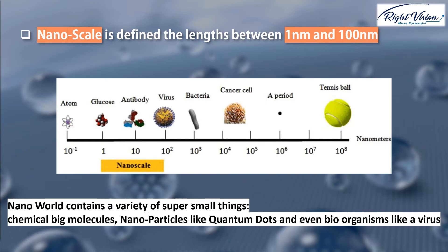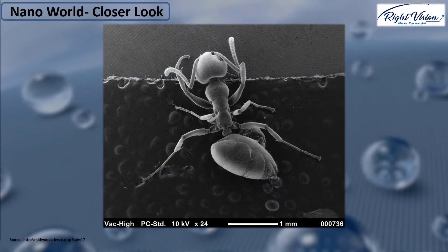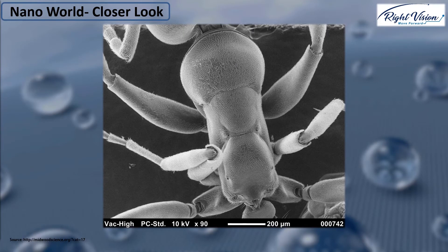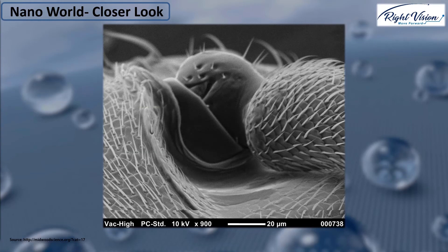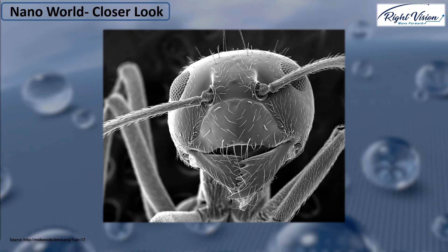Thanks to advanced microscopy systems, we can now disclose the nanoworld. Here I show you a series of pictures of an ant, and I bet you have never seen an ant like you're going to see here. This first picture has just been magnified. The second image — the length of this white bar is about 200 micrometers, so you have the scale. Next, the white bar equals 50 microns, and it looks like the ant has some fluffy fur on its skin — just look at the eye structure. And then at 20 micrometers, we can observe details we could not see with our naked eyes. And finally, a smiling ant that looks like he knew someone was taking pictures of him.